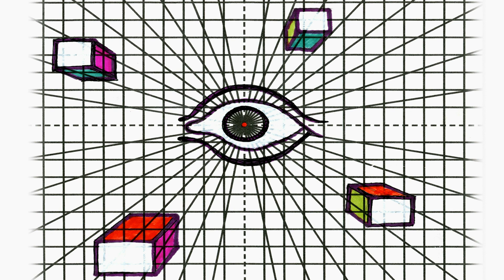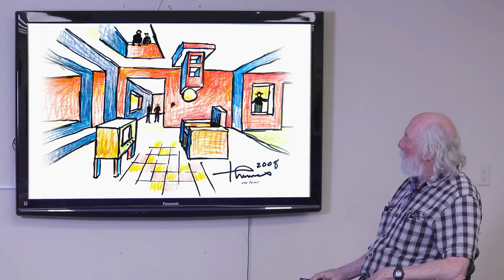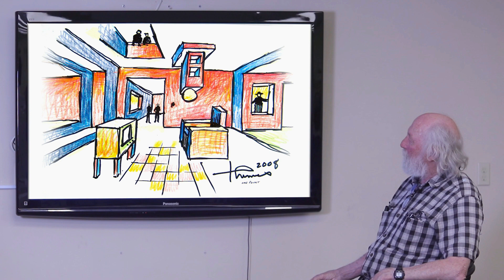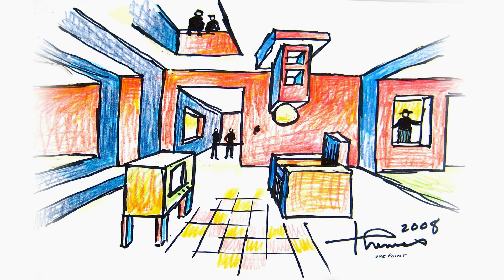So if you're underneath the cubes, you see the bottom of them. If you're above the cubes, you see the top. This is my first example of one point perspective — it's of an interior that you're looking at. You can see the vanishing point in the wall there.